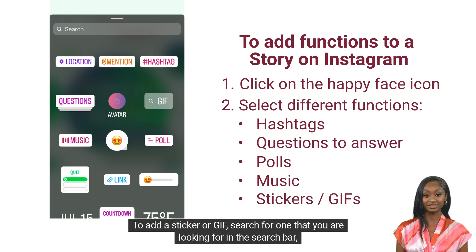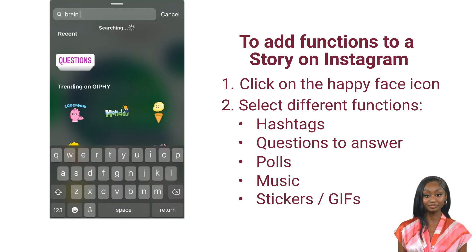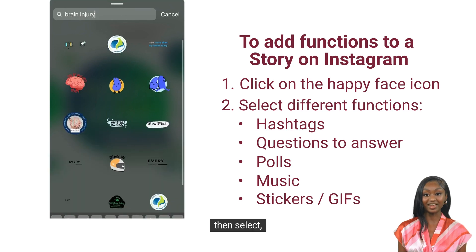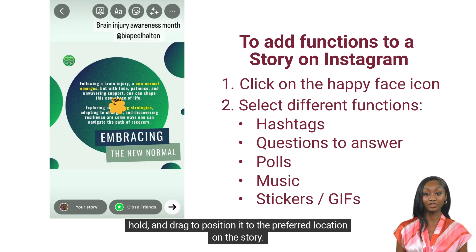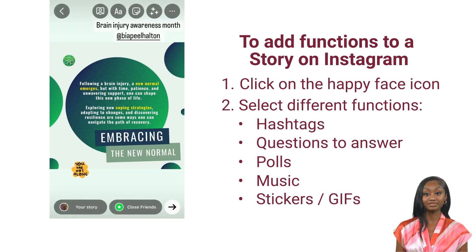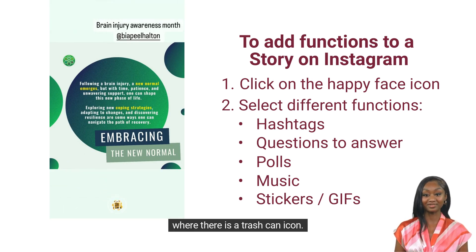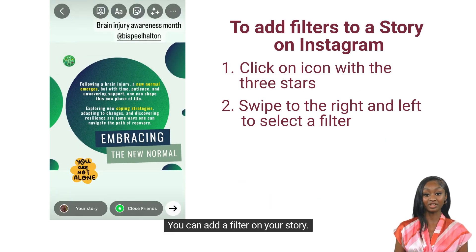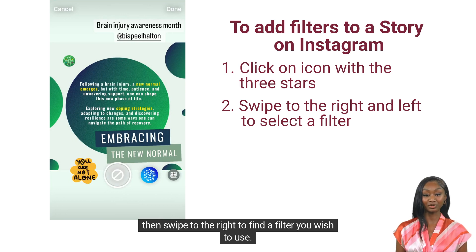To add a sticker or GIF, search for one that you are looking for in the search bar. To delete a sticker or other function on the story, tap and hold to drag it to the bottom of the screen, where there is a trash can icon. You can add a filter on your story. To do so, click on the icon with the three stars, then swipe to the right to find a filter you wish to use.